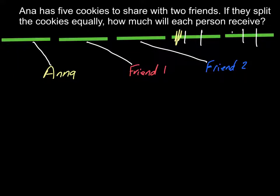And then Anna will get this piece and this piece. Her first friend will receive this piece and this piece. And her second friend will receive this piece and this piece. So each person is receiving one whole cookie and two pieces out of the three pieces that are total inside those two cookies.